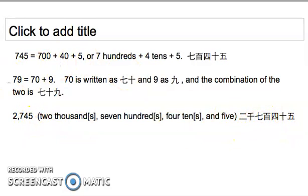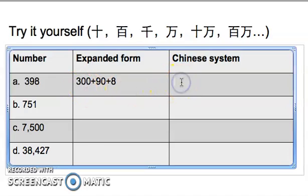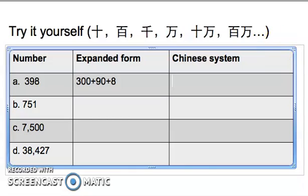So let's practice a little more. Why don't you try it? So how do you say three hundred and ninety-eight in Chinese? So I kind of expanded the form for you. So there's three hundred plus ninety plus eight, which means how many hundreds are there? There is three hundred, right? So the hundred is, this is the hundred, and this is the tenth. So three hundred is san bai, right? San bai.